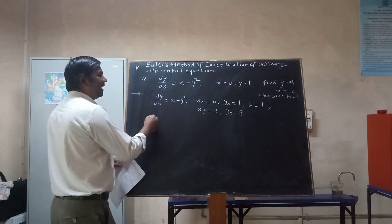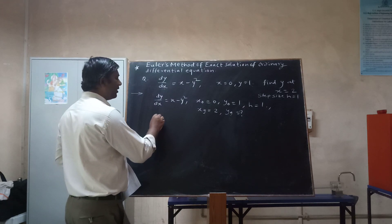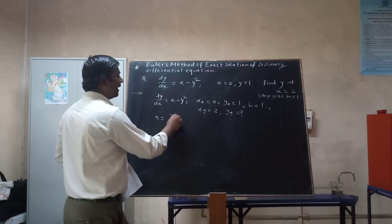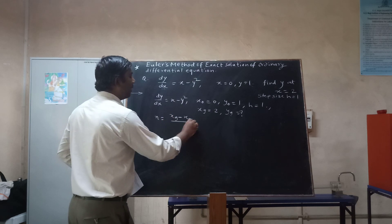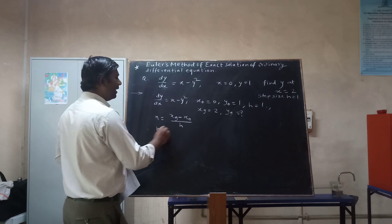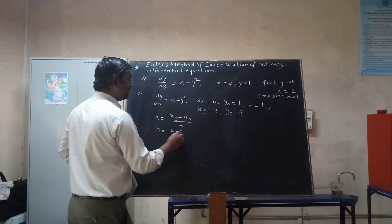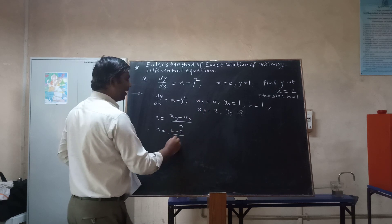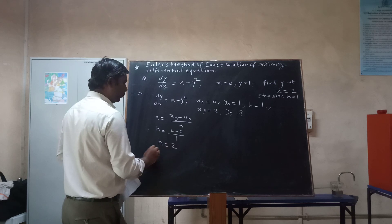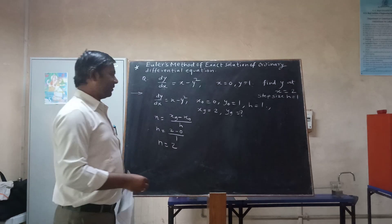How many iterations will we perform? n = (x_final - x₀) / h = (2 - 0) / 1 = 2. So we will perform two iterations.